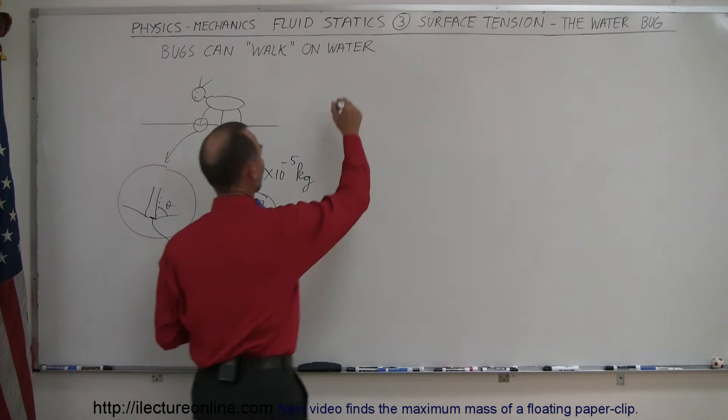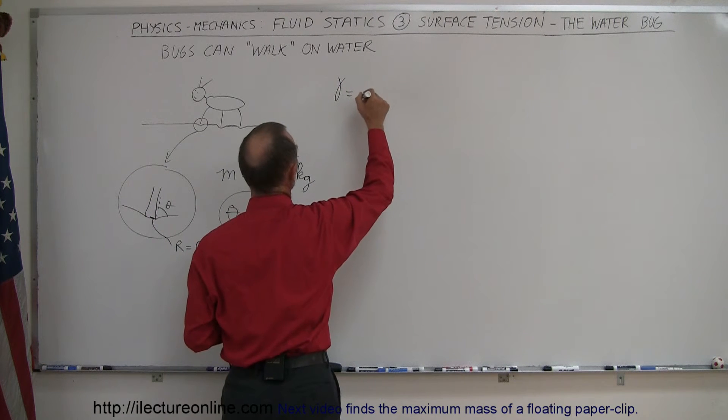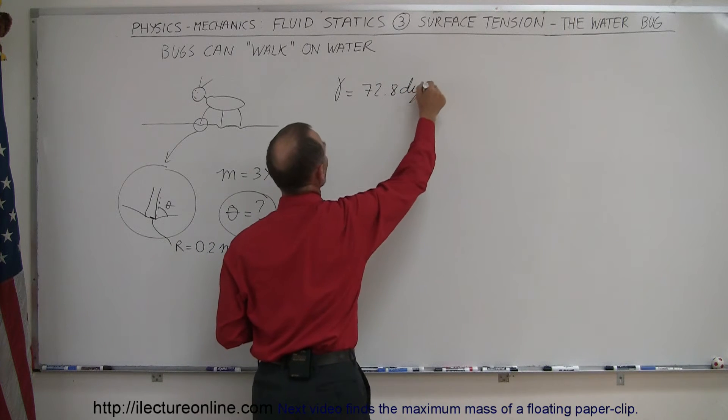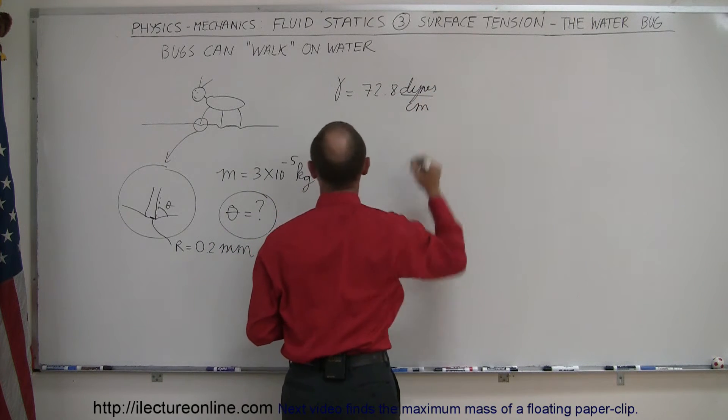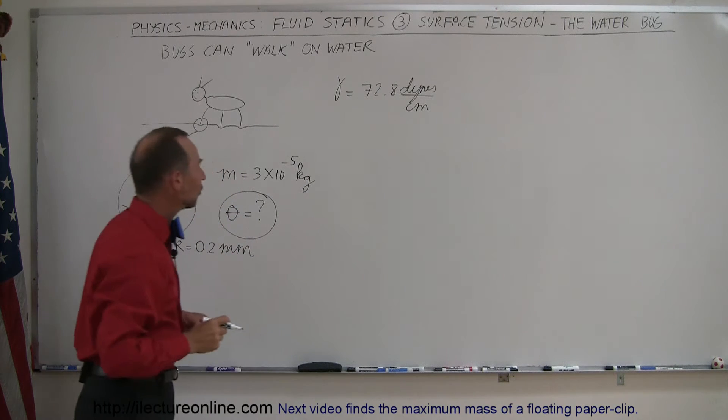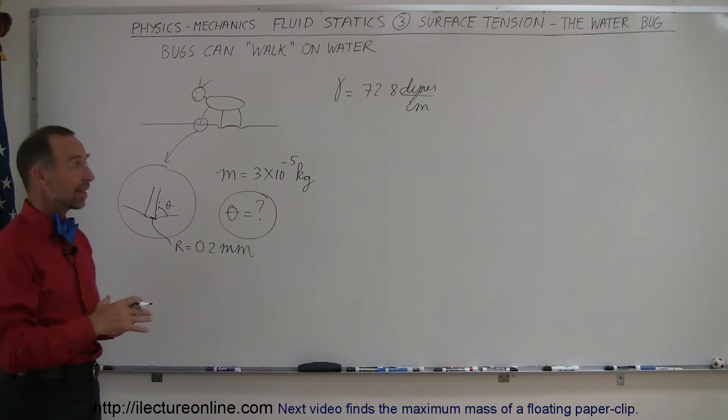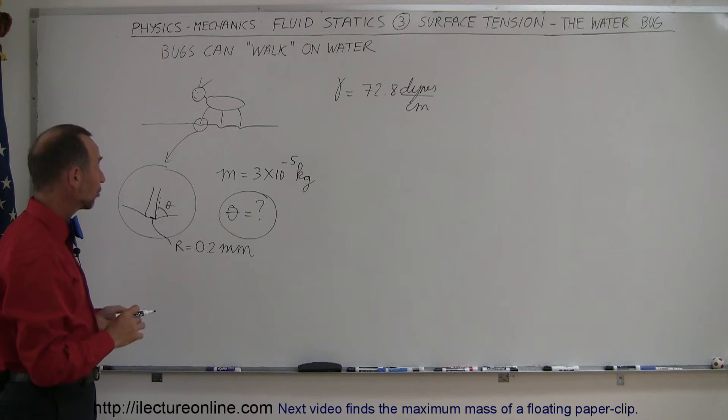Again, the coefficient of surface tension for water, let's say at 20 degrees, would be 72.8 dynes per centimeter. And yes, let's work this one out using CGS units instead of MKS units and see what we get. So we're going to do everything in dynes and centimeters.